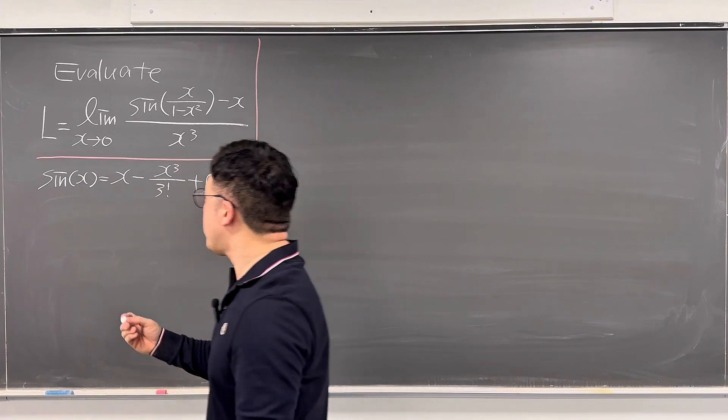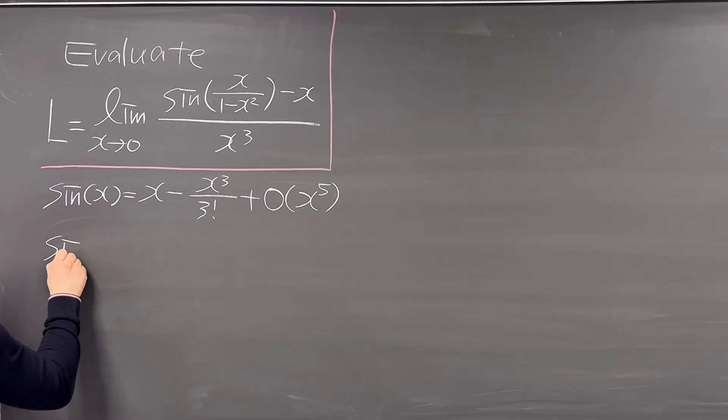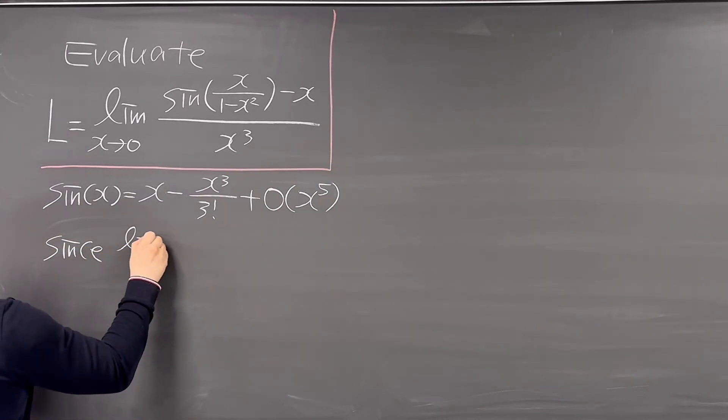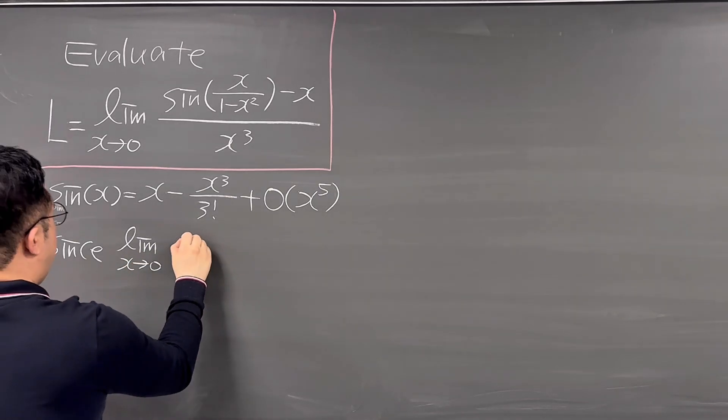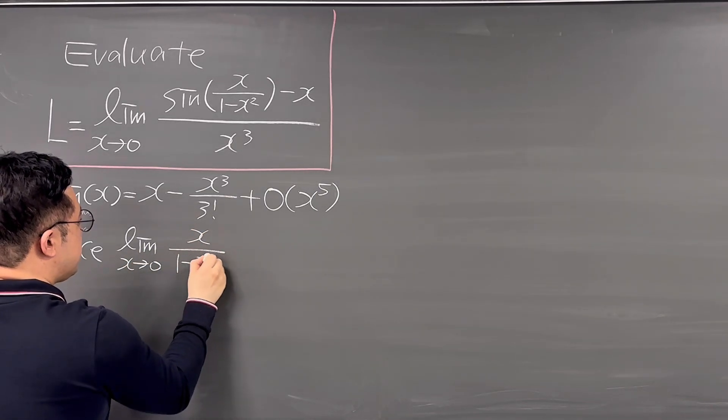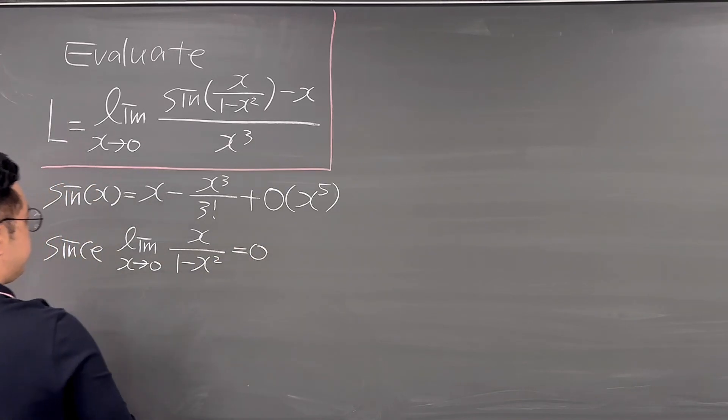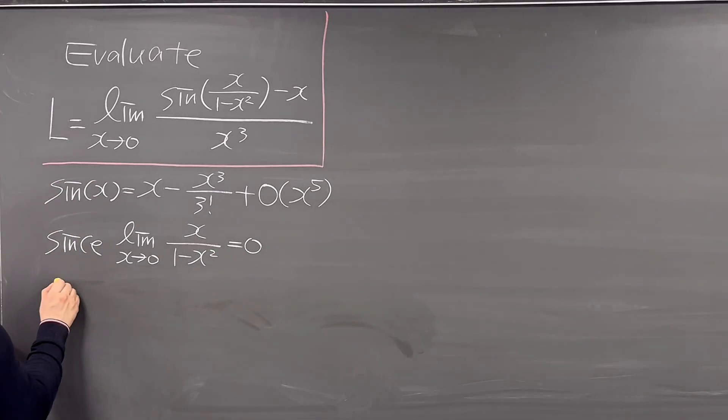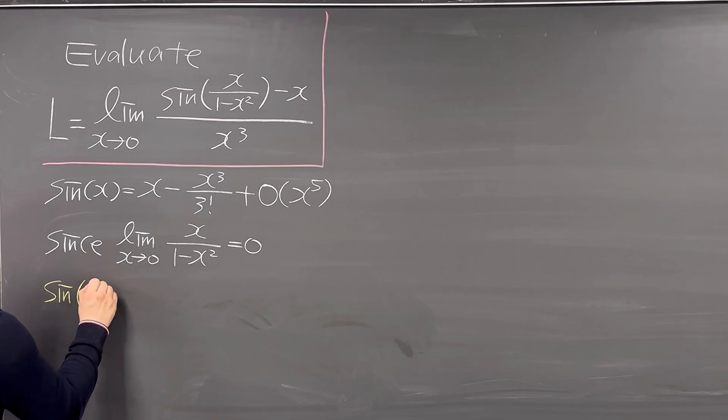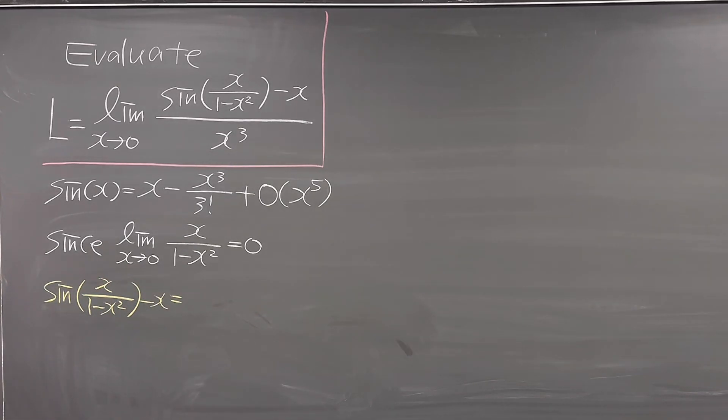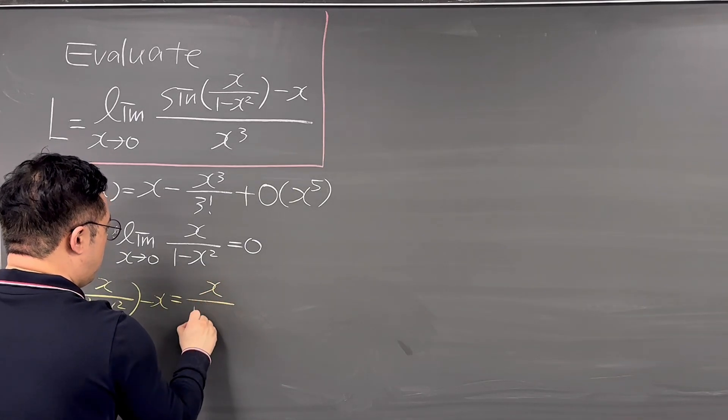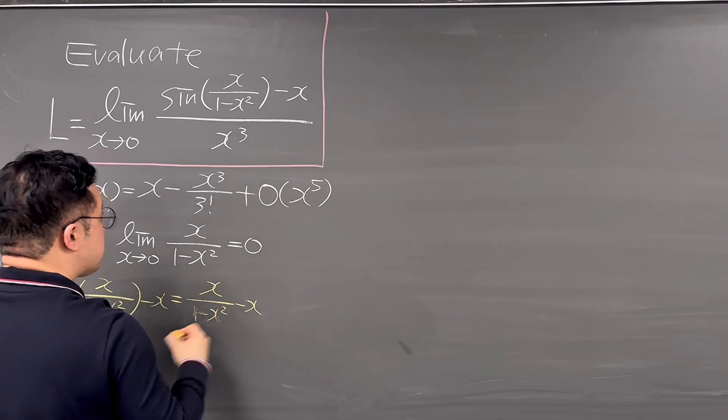And then we can notice how limit when X is going to 0, X over 1 minus X squared, this is equal to 0. So that is why the sine of X over 1 minus X squared minus X is going to be just the same as X over 1 minus X squared minus X.